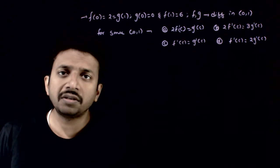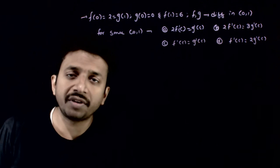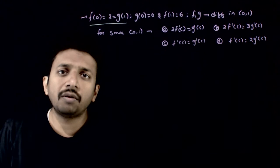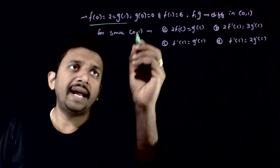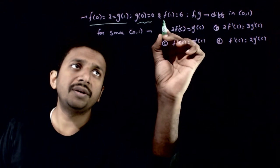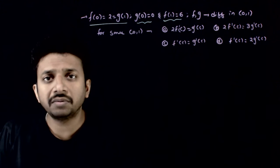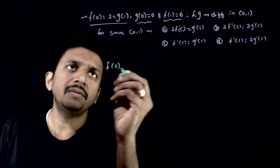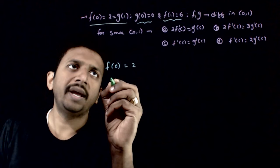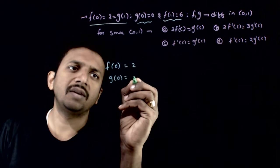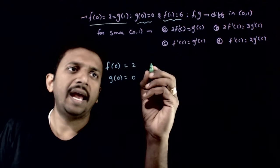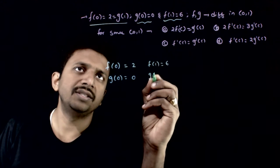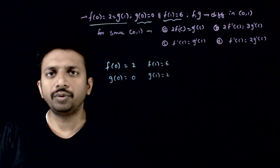Welcome students. In this question, you are given that f and g are two differentiable functions, where f(0) = g(1) = 2 and g(0) = 0 and f(1) = 6. So we have f(0) = 2, g(0) = 0, f(1) = 6, and g(1) = 2.